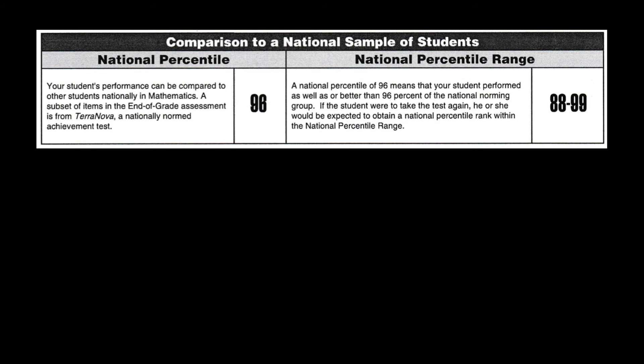Now we're looking at a comparison to a national sample of students. This child performed in the 96th percentile. A subset of items in the end-of-grade assessment is from Terra Nova, a nationally normed achievement test. A national percentile of 96 means the student performed as well as or better than 96 percent of the national norming group. If the student were to take the test again, he or she would be expected to obtain a national percentile rank within the range of 88 to 99.